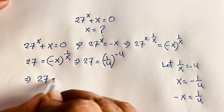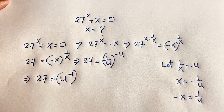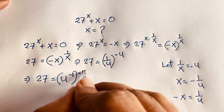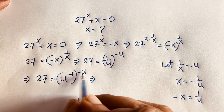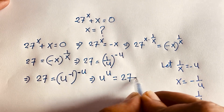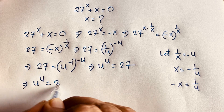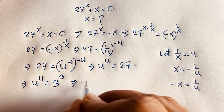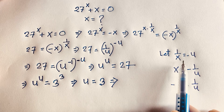This simplifies to: 27 equals u to the power minus 1, raised to the power minus 1 — because 1 over u is u to the power minus 1. According to exponential law, minus times minus gives positive, so we find u to the power u equals 27. And 27 is 3 to the power 3. Since the base and exponent are the same on both sides, we get u equals 3.